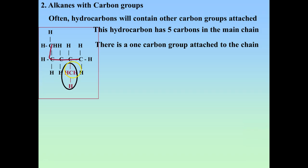Now, if this were a chlorine, you would say there's a chloro group attached, and you'd count from the closest end. So there's one, two — you'd say this is a 2-chloro group. But it's not a chlorine, it's a carbon group.